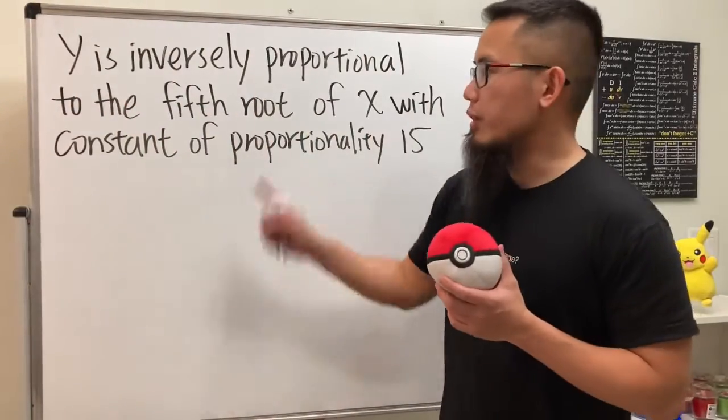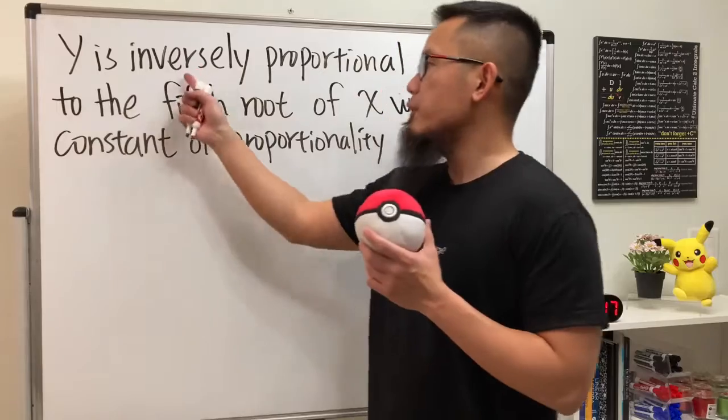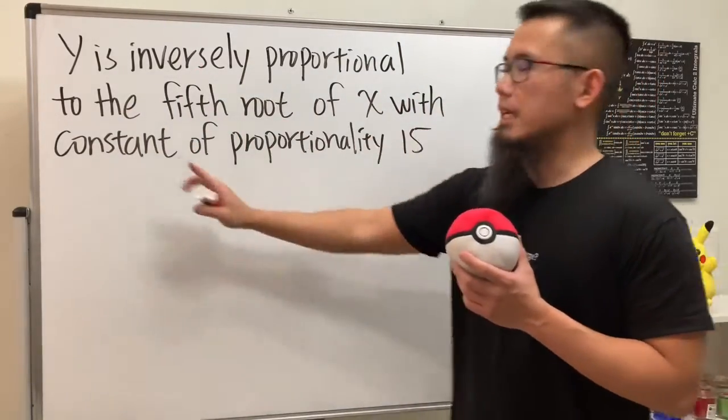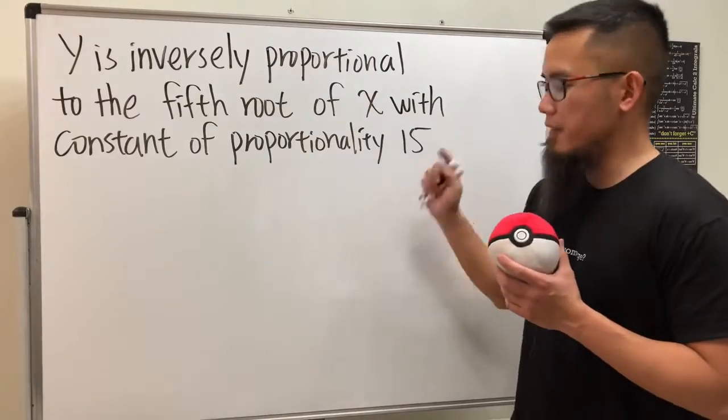Here we are going to write an equation for this situation: y is inversely proportional to the fifth root of x with constant of proportionality 15.